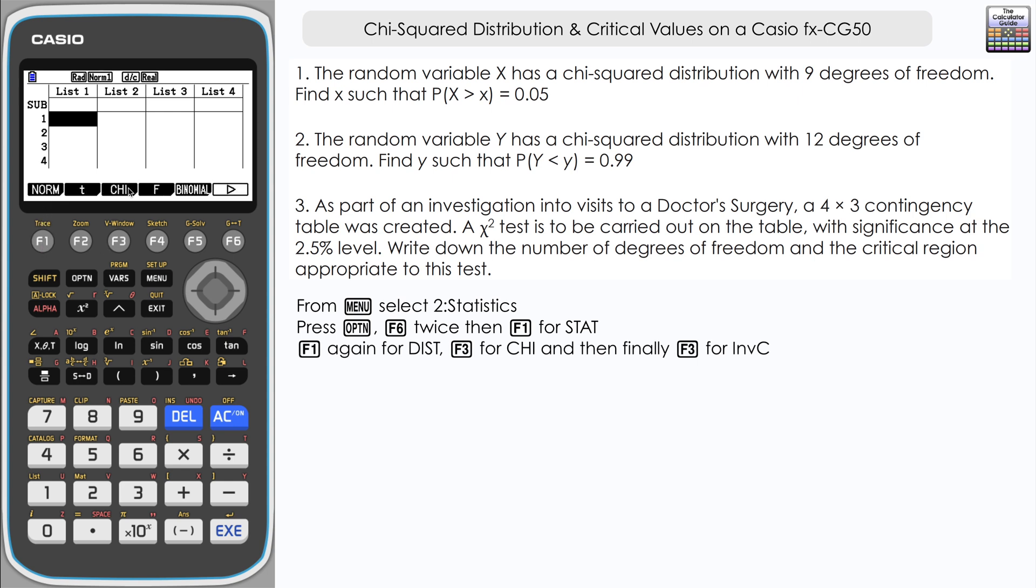We've got several distributions listed here. You can see in the middle we've got chi, so that's F3, and then finally we have our last selection here and we're going to choose F3 inverse chi. It's inverse chi-squared distribution and you can see that's opened up a set of brackets.